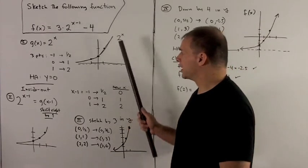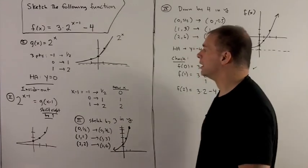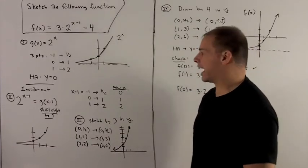So, we have three points, horizontal asymptote, I connect the dots, and that gives me my function. So that's how I remember how to graph 2 to the x.